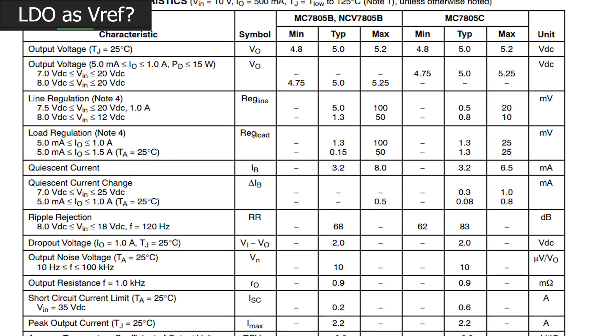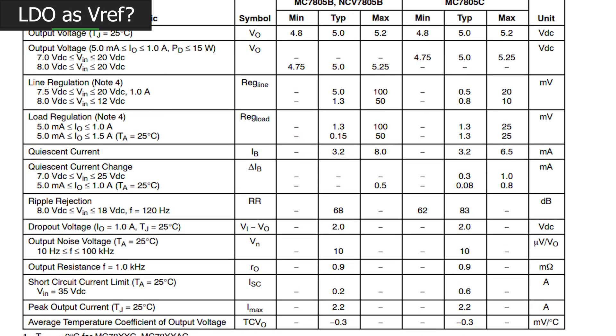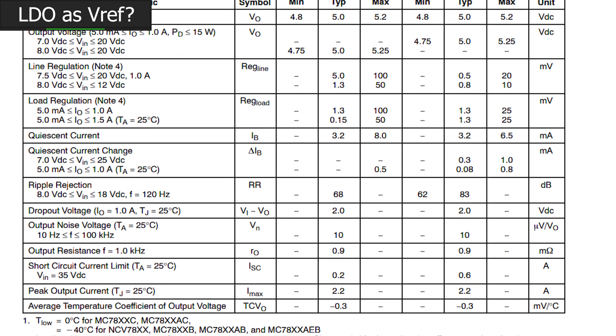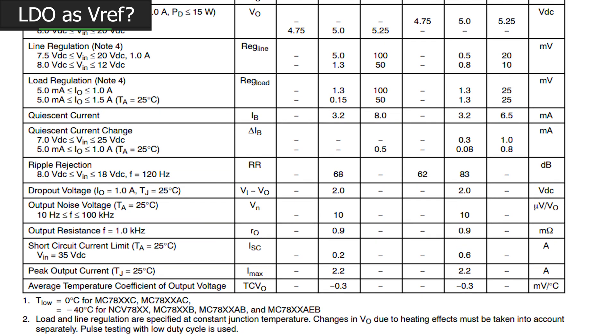What about line regulation, load regulation, temperature effects, and drift? Worse, about the same, way worse, and worse. Turns out this voltage regulator, while sufficient for providing power that's around 5 volts, makes for a pretty sloppy voltage reference. It's almost like that's why there's a separate product category for LDOs and voltage references.